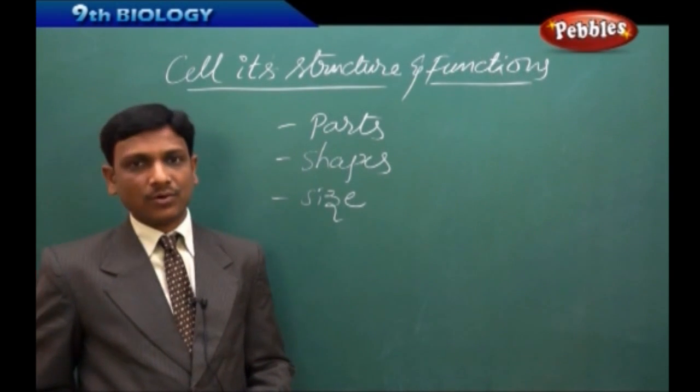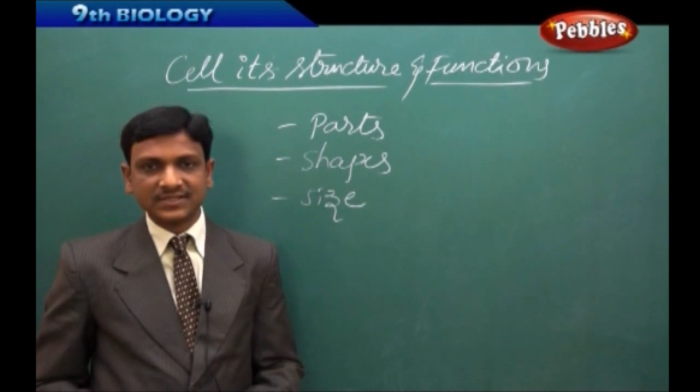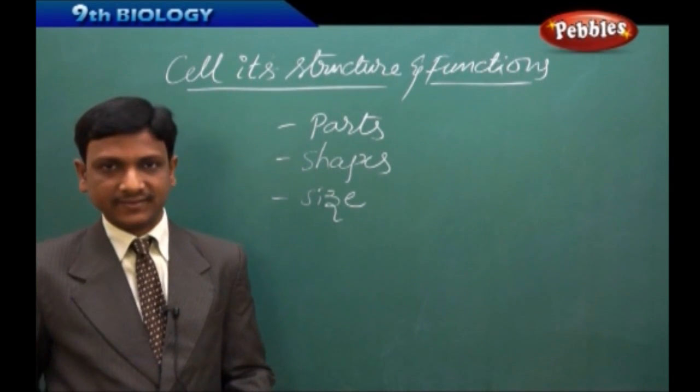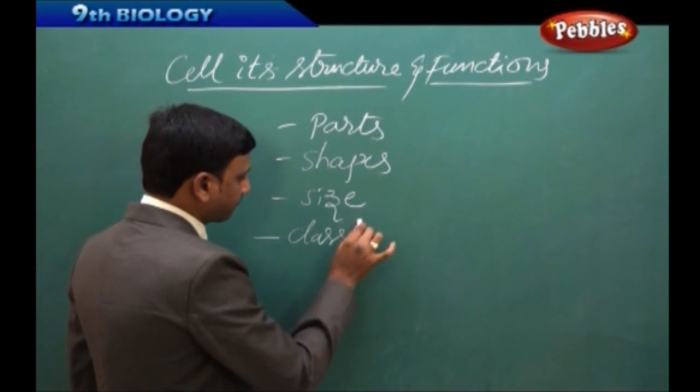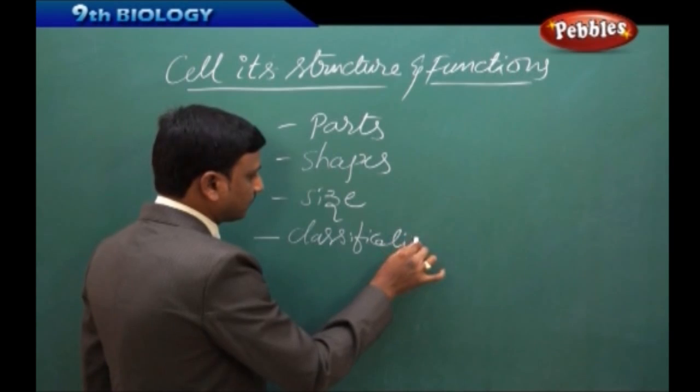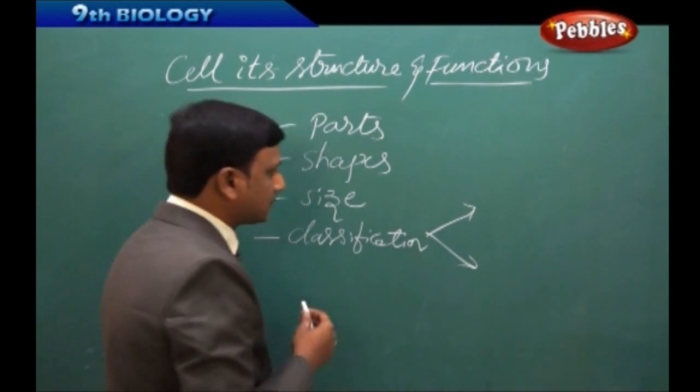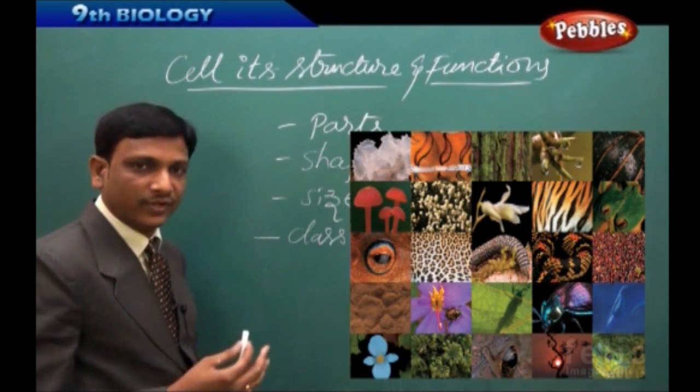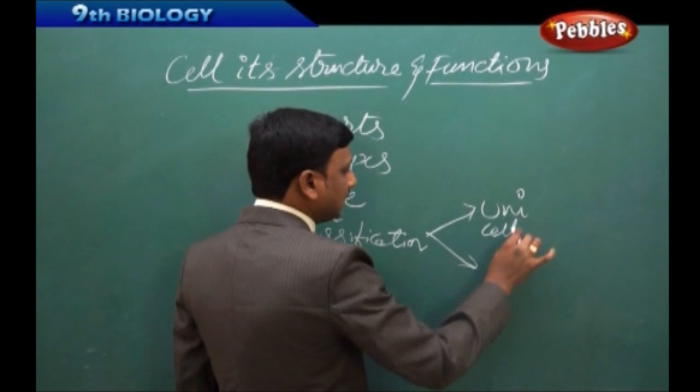We also learned about the classification, division of organisms based upon the number of cells they contain. So all the organisms are divided into two groups according to the number of cells. That is unicellular, multicellular.